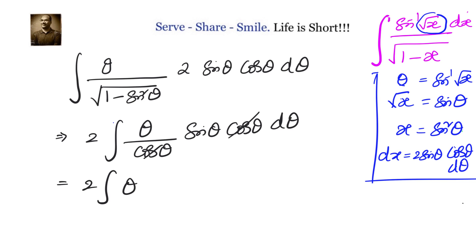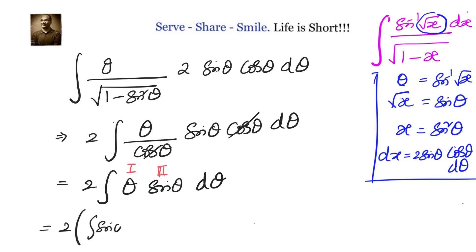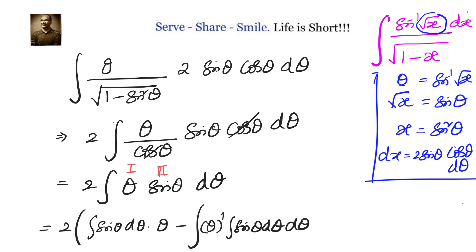We are left with 2 times the integral of theta into sin theta d theta. We have an integral of a product of two functions, so we use integration by parts. We take sin theta as the second function, which we integrate first, and theta as the first function, which we differentiate. Applying the formula: integral equals second function's integral multiplied by the first function, minus the integral of the derivative of the first function multiplied by the integral of the second function.